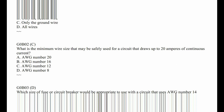G0B02: What is the minimum wire size that may be safely used for a circuit that draws 20 amps of continuous current? The answer for 20 amps would be number 12. If it was 15 amps, the answer would be number 14. 50 amps is, I think, number six.